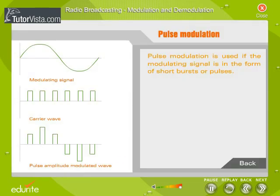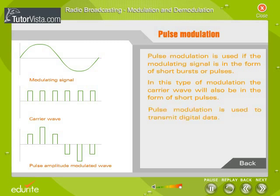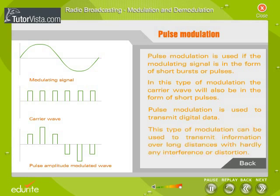Pulse Modulation: Pulse modulation is used if the modulating signal is in the form of short bursts or pulses. In this type of modulation, the carrier wave will also be in the form of short pulses. Pulse modulation is used to transmit digital data, and can transmit information over long distances with hardly any interference or distortion.